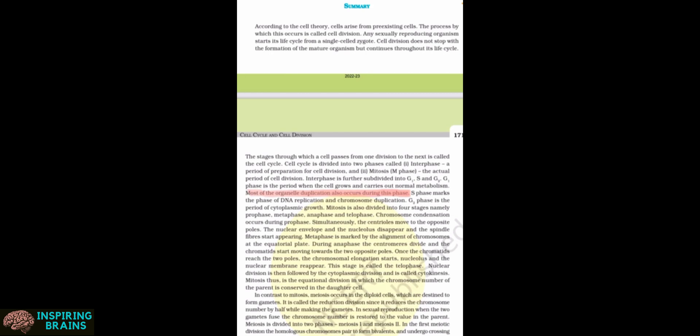For example, this is the summary of the cell cycle chapter. The highlighted portion states that most organelle duplication occurs during the G1 phase. So when a question asks 'in which phase does organelle duplication occur,' the answer is G1 phase — and this information is only in the summary, not inside the chapter. That's why reading the summary is very important.